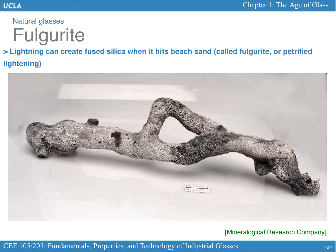The first example of glass that can be found in nature is the fulgurite. Here is a picture illustrating an example of such fulgurite material. Those types of fulgurite form when there is lightning that hits beach sand. The lightning is going to melt the sand and then the sand is going to turn into a glass, forming this elongated shape which characterizes the path of the lightning inside the sand.